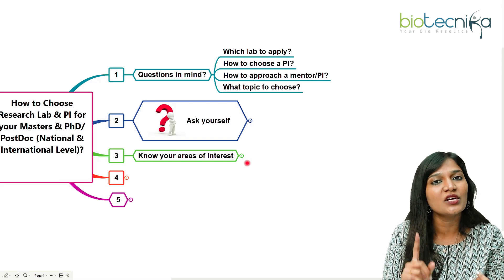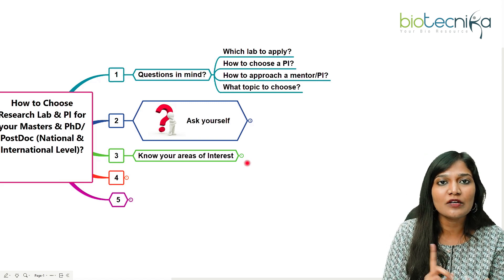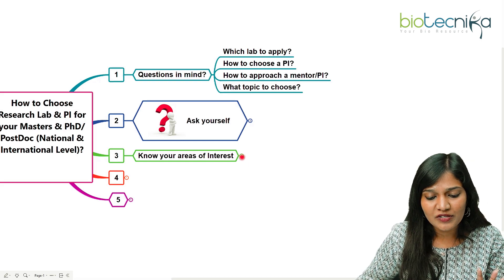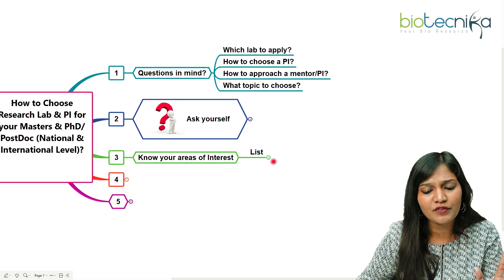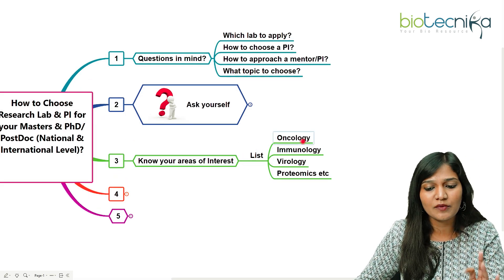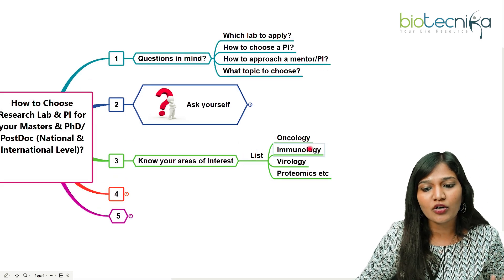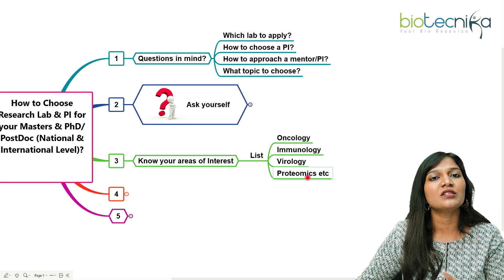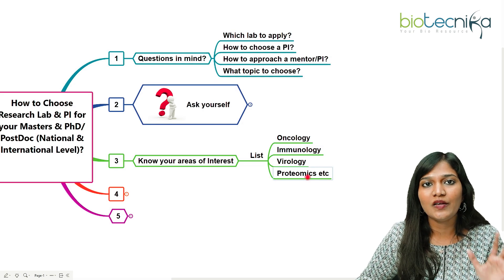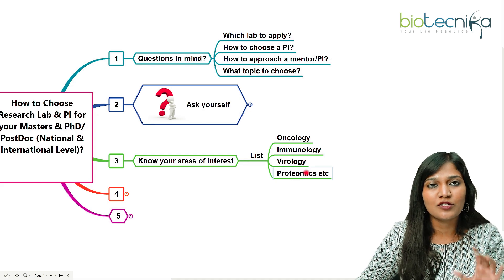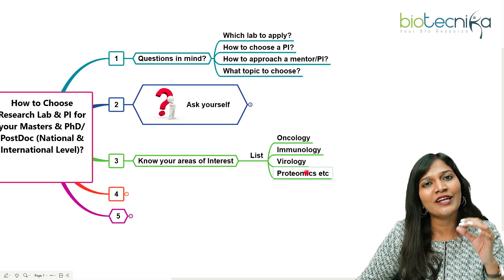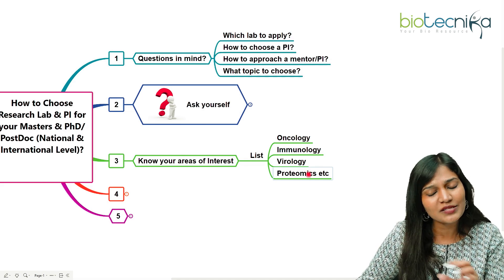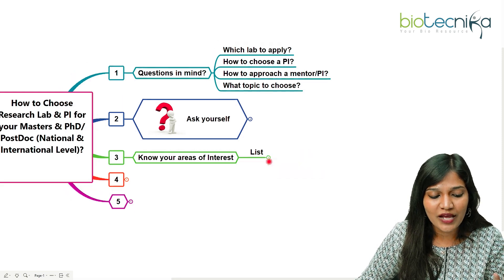After identifying your questions, choose your research interest first — basic or applied — and then define your area of research. It can be oncology, immunology, virology, proteomics, or any other area. These are like subtopics or subdivisions of the big topics. Research areas can be anything; there are many possibilities.